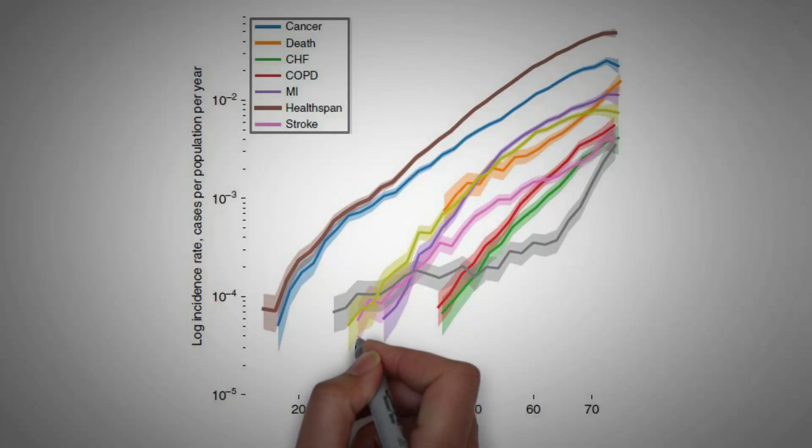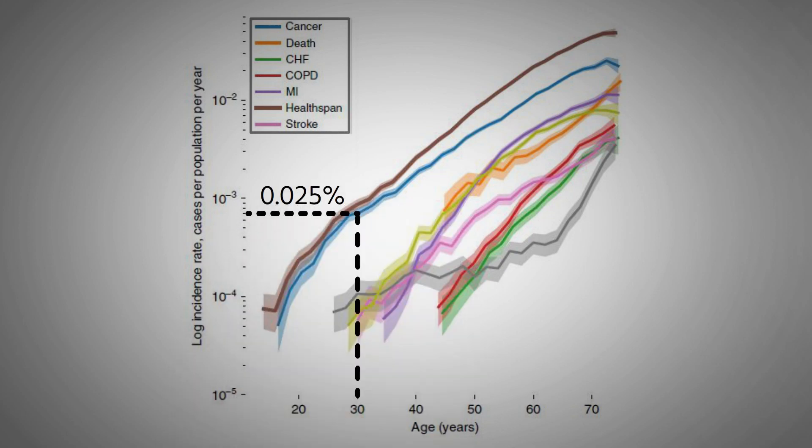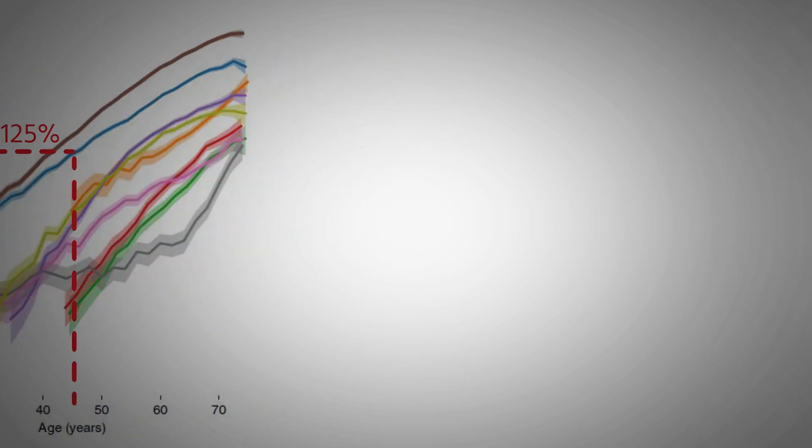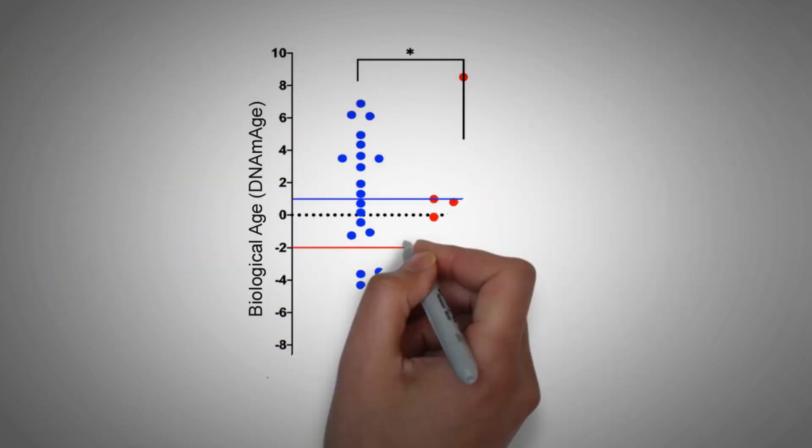Let's say you are 30 and statistically speaking your risk for cancer is 0.025%. But if your biological age is actually 45, your risk for cancer is 5 times higher than that. But don't worry, the study we are about to discuss here shows us that it can be fairly easy to reverse our biological age.